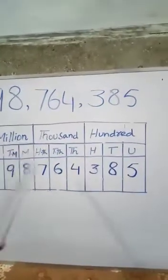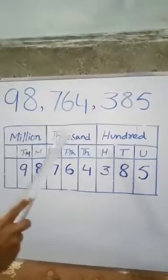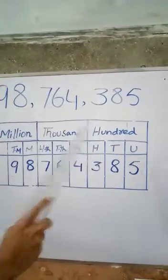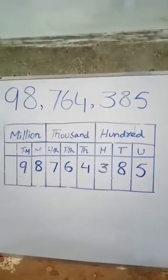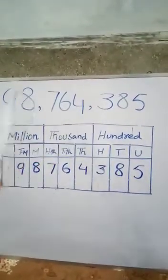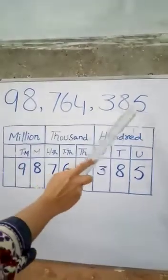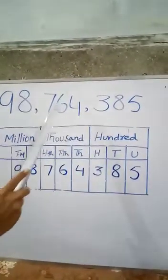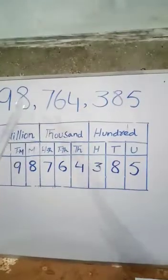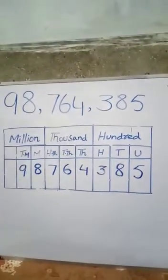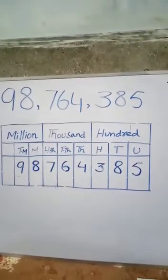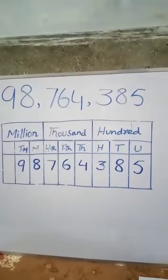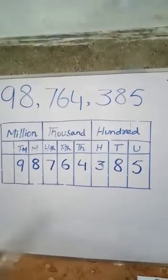In this question we have three families: million family, thousand family, and hundred family. After one family, we will put a comma. After three numbers we will put a comma. After three members we will put a comma. This is your question. Now each family has three members; after three numbers we will put a comma.